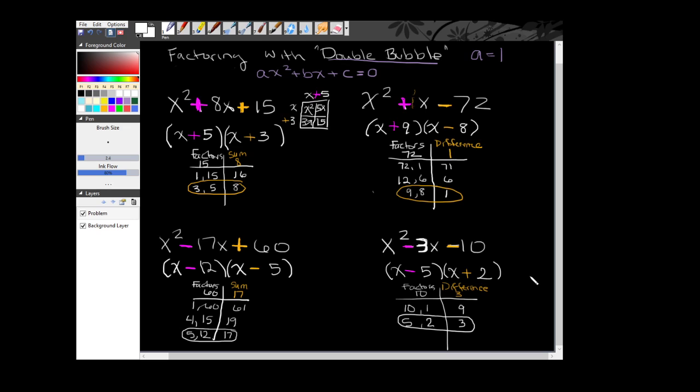So that's it. Following those simple rules for double bubble, you should be able to factor anything that you encounter, right here where you have an a equal 1. Although, understand that there are some problems that are not factorable. So if you have a not factorable problem, you'll get to this table and you won't see anything that actually either adds or subtracts properly. So keep your eye out for those, and we'll find out how to solve those later. Until next time.